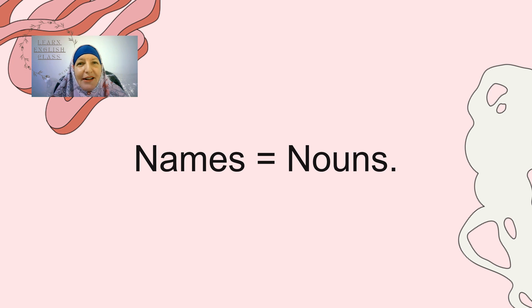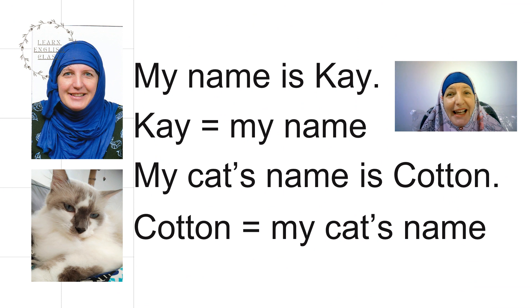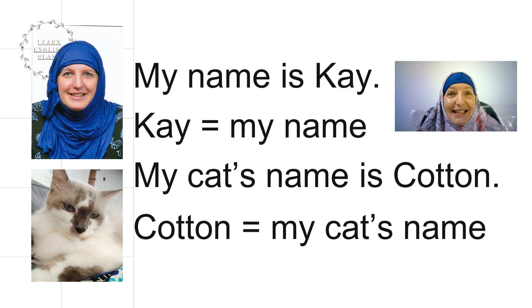When we talk about names, we're using nouns. My name is Kay — Kay equals my name. My cat's name is Cotton — Cotton equals my cat's name.